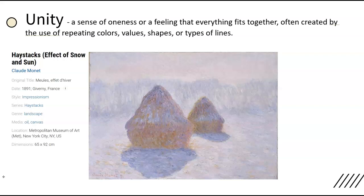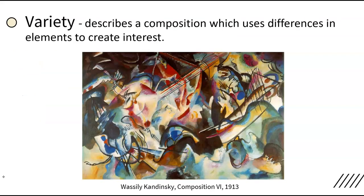Unity is a sense of oneness or a feeling that everything fits together, often created by the use of repeating colors, values, shapes, or types of lines. What repeated elements does Monet use here to create a sense of unity in his painting Haystacks? Variety describes a composition which uses differences in elements to create interest. How does Kandinsky use variety in Composition 6? A good composition will use both variety and unity to catch a viewer's attention and please the eye.